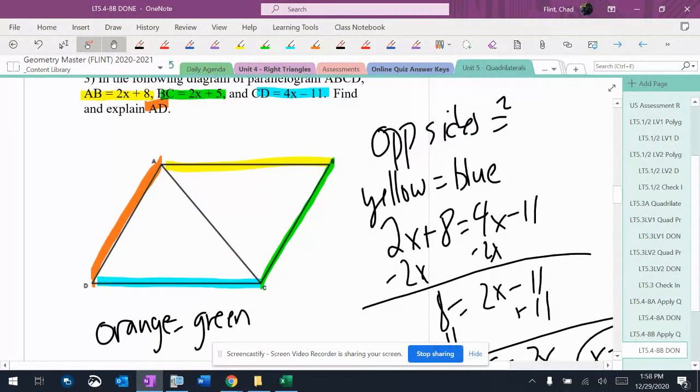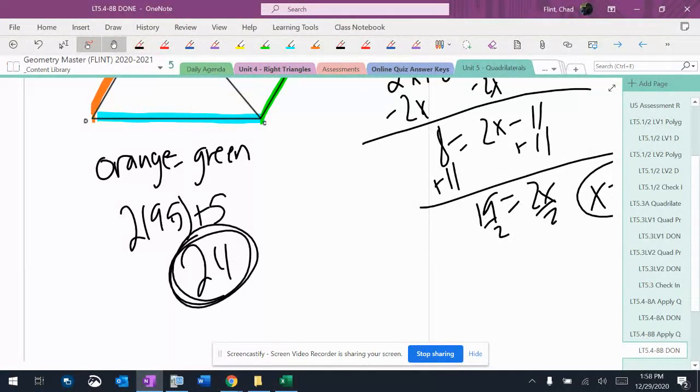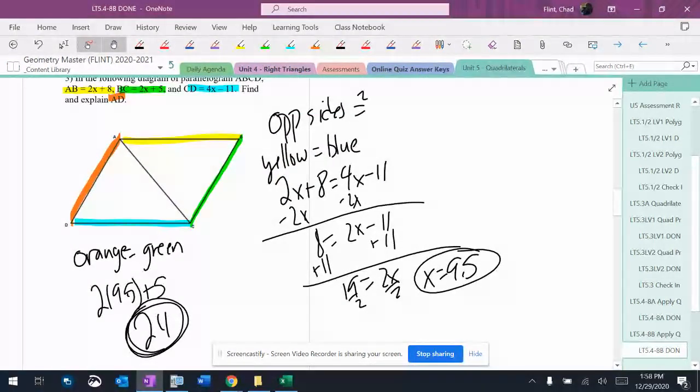I'm going to take my 9.5. Green is 2x plus 5. So 2 times 9.5 plus 5. That's 24. So my side is going to be 24.